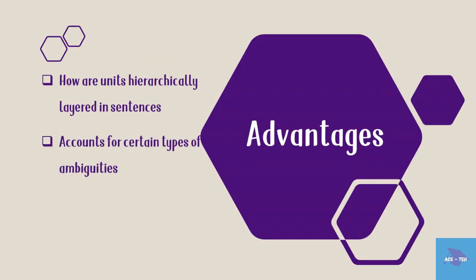IC analysis can account for certain types of ambiguities. For example, 'old men and women' is an ambiguous phrase — who is old? Both men and women, or just men? Bracketing in IC analysis helps to solve the problem and find the right meaning.